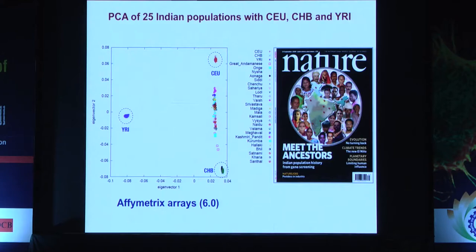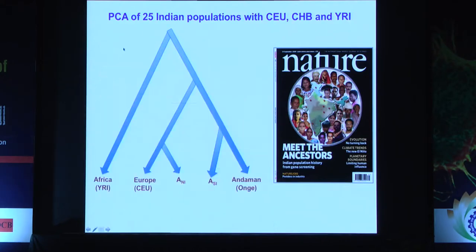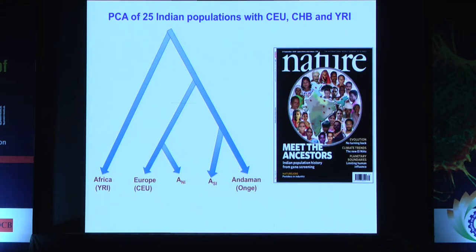However, there is still some kind of genetic affinity between the groups. By looking at this population data, we propose that in prehistoric India there were two founding populations. One we call the Ancestral South Indians, who are part of the early modern human migration — the same migration that brought people through the southern coastal route toward the Andaman Islands, with some settling in the southern part of India.